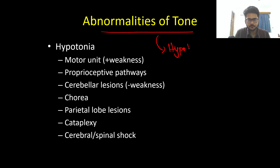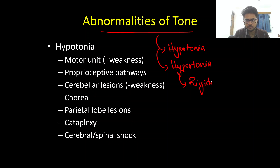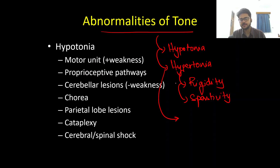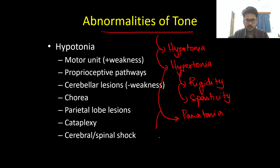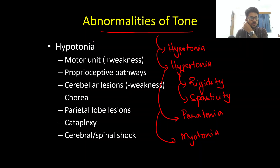Now coming to the abnormalities of tone. The important abnormalities are: hypotonia — decrease in tone; hypertonia — increase in tone, which can either be rigidity (extrapyramidal involvement) or spasticity (corticospinal tract or pyramidal involvement); paratonia; and myotonia. These are the tone abnormalities we'll be covering in this class.